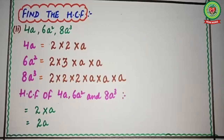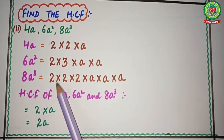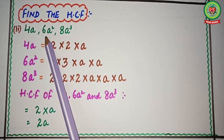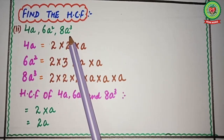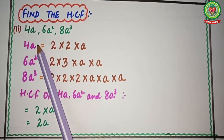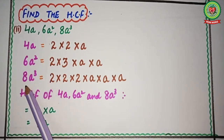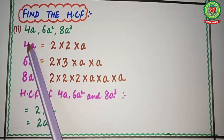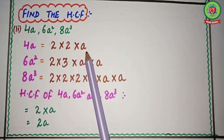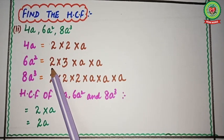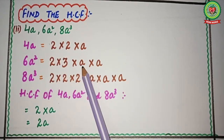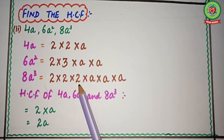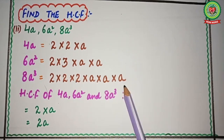Now move to the next example: find the HCF of three terms — 4a, 6a², and 8a³. We write the first term 4a, second term 6a², and third term 8a³. Factors of 4a: 2 × 2 × a. Factors of 6a²: 2 × 3 × a × a. Factors of 8a³: 2 × 2 × 2 × a × a × a.